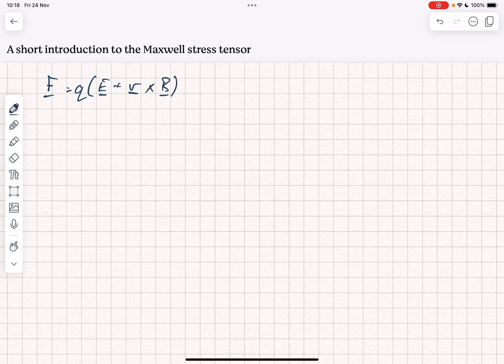Now, if we have a collection of charges and fields in a volume V, we can write the total force as the volume integral of rho, the charge density, into E plus V crossed with B. And you'll notice that we've made something of an assumption here, and that we've only given a single velocity.